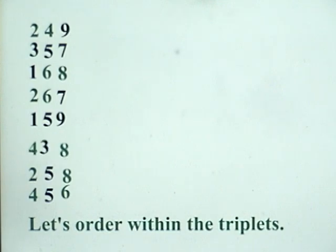And once we find those triplets, we order them. First within themselves, and then all eight triplets together.